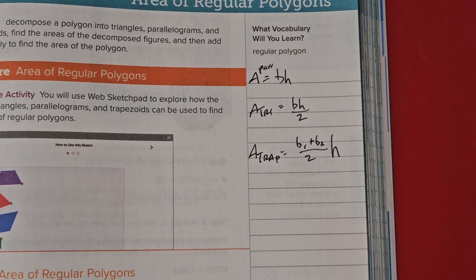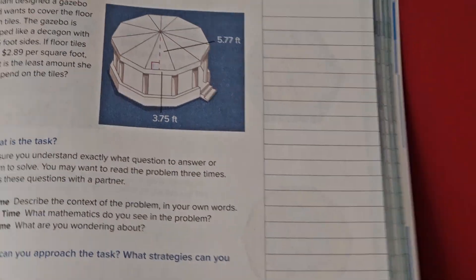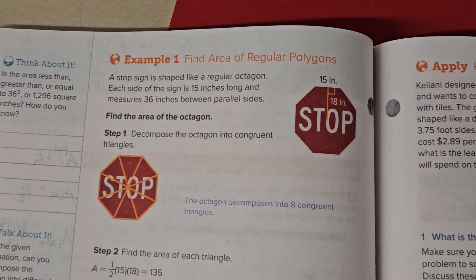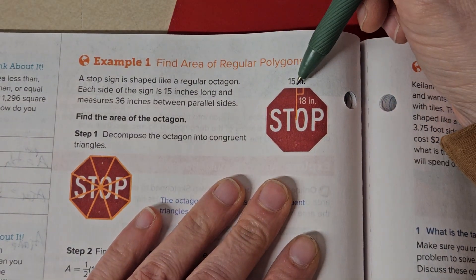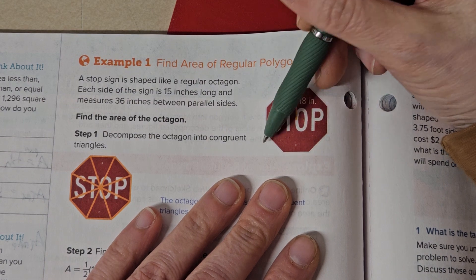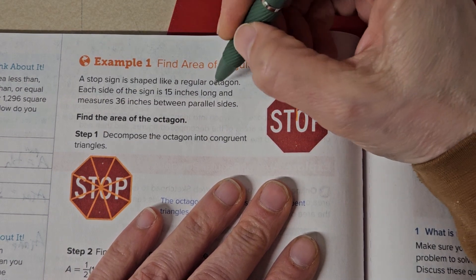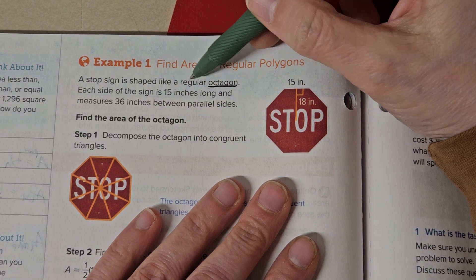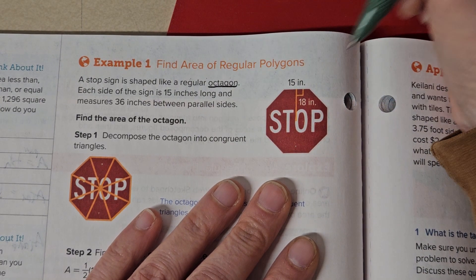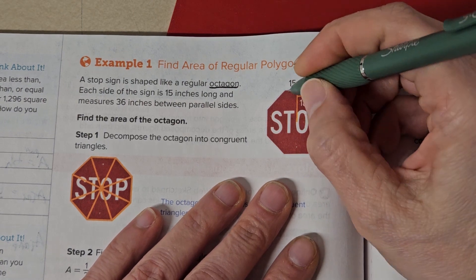All right, let's turn the page and go look at this stop sign. So here we have a stop sign. And how many sides does a stop sign have? One, two, three, four, five, six, seven, eight. That's called an octagon.